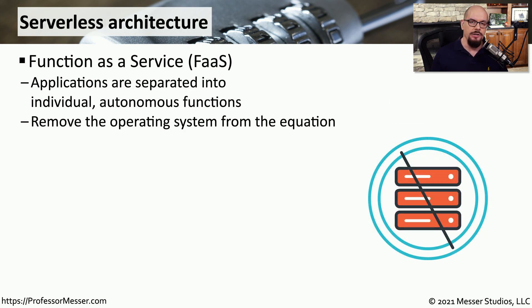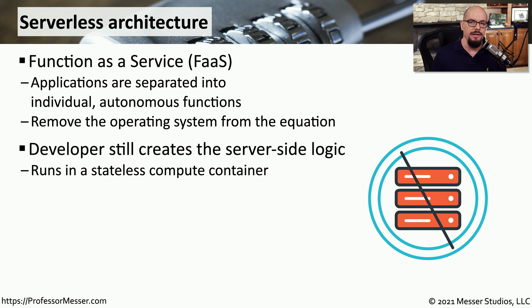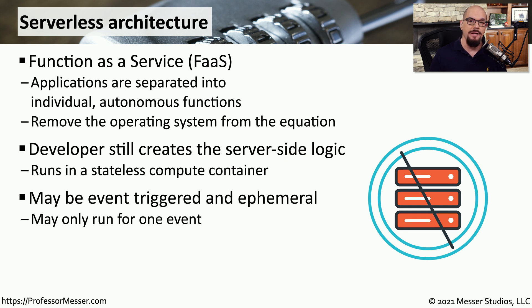We can expand on this segmentation of functions using a serverless architecture. This allows us to take the operating system completely out of the equation and instead perform individual tasks based on the functions requested by the application. The developer takes each individual function and deploys it into what we call a stateless compute container. These compute containers are simply processors designed to respond to API requests — the application sends in the API request to the compute container, and the results are sent back to the client. This allows compute containers to be available only as needed, built and torn down as people access those services.